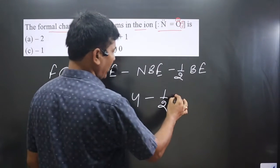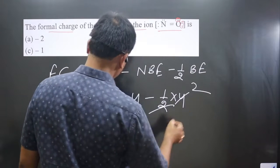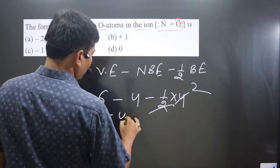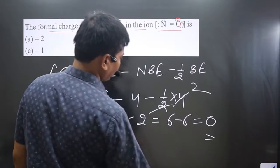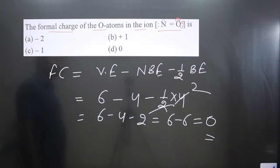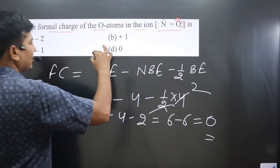This equals 6 - 6 = 0. Therefore, the formal charge on oxygen is zero. The correct answer is option C.